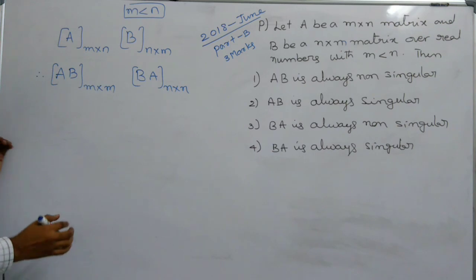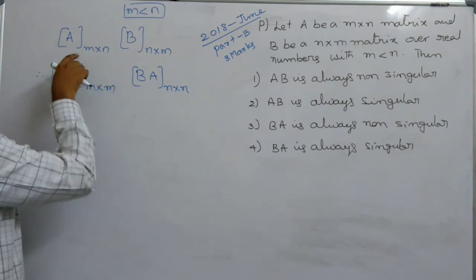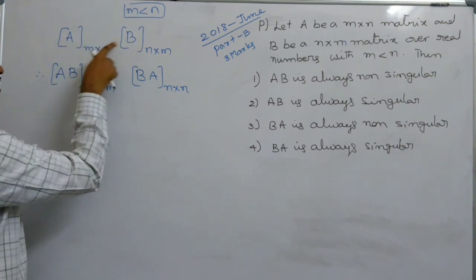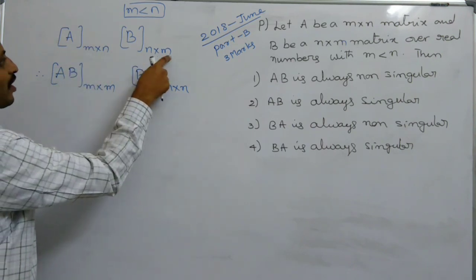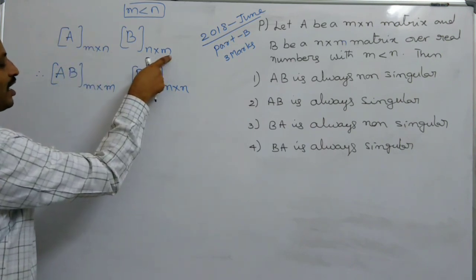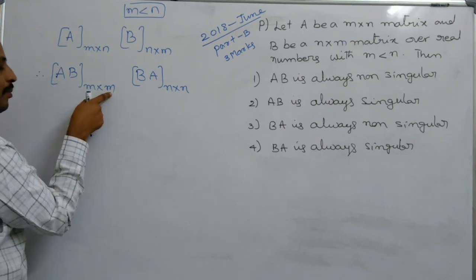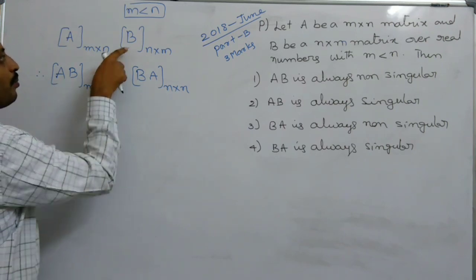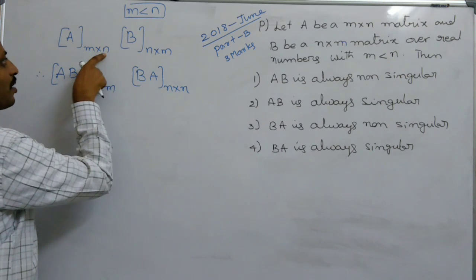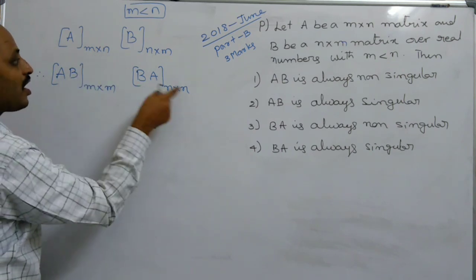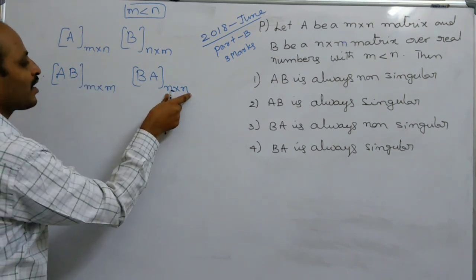Matrix multiplication is possible only if the number of columns of one matrix equals the number of rows of the other. So AB exists with order m×m, and BA also exists because the number of rows n equals the number of columns n, but its order is n×m.